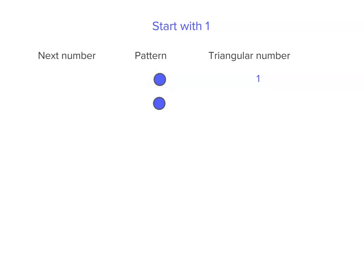Now what we do is we start with that one dot and we add two dots. And that means we've got 1 plus 2, which equals our next triangular number, which is 3.